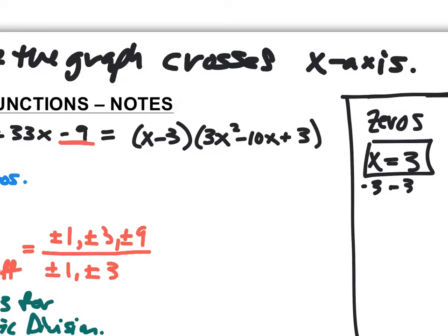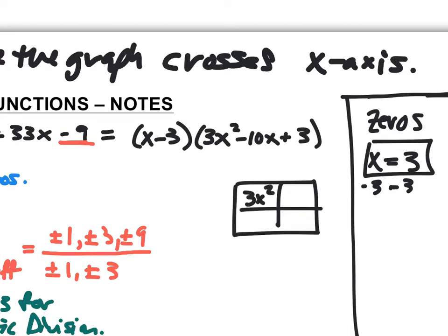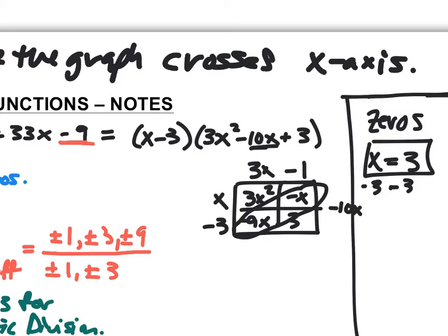Now I have a quadratic, so I want to factor 3x² - 10x + 3. Using the box method: I put 3x² and 3 in the box. I use 3x and x, then -3 and -1. Checking: -1 × x = -x and -3 × 3x = -9x; combined that gives -10x, which is exactly what I'm looking for.